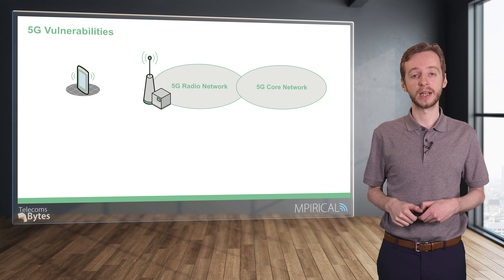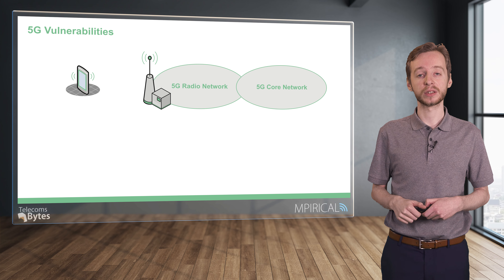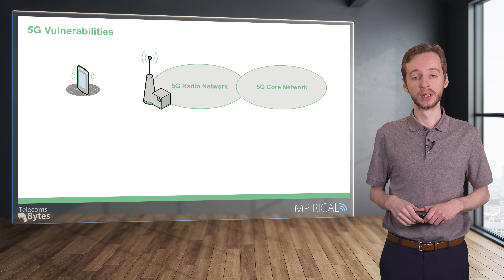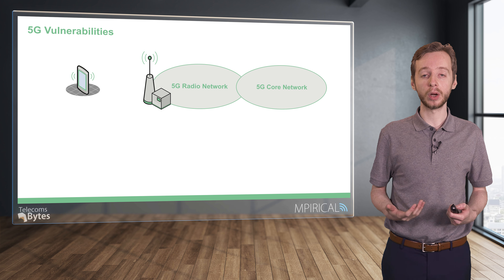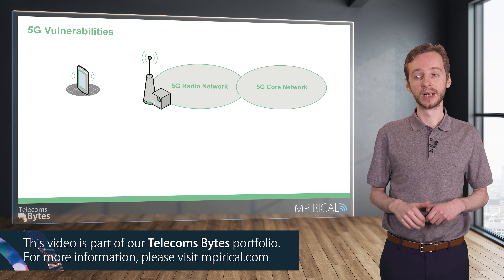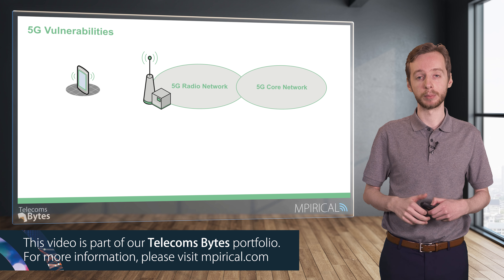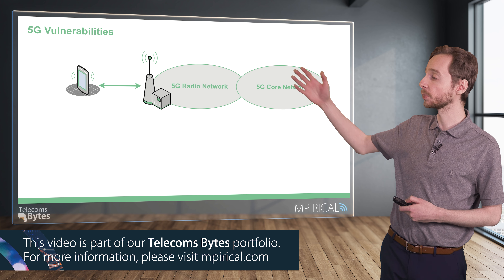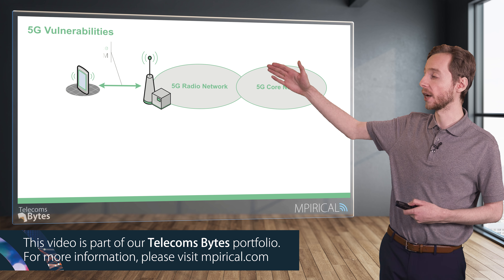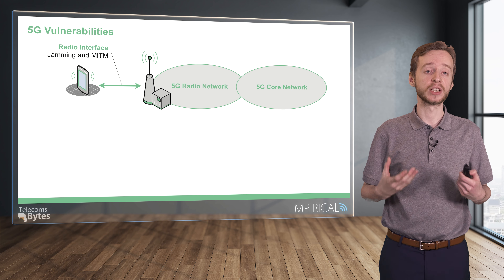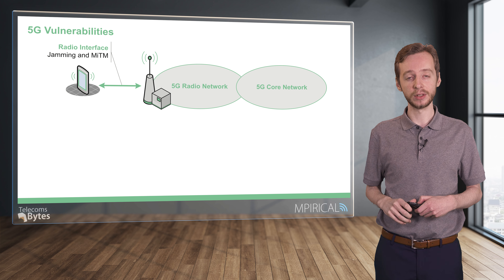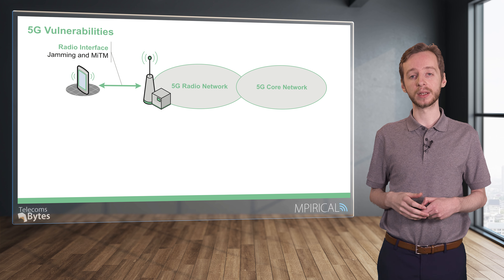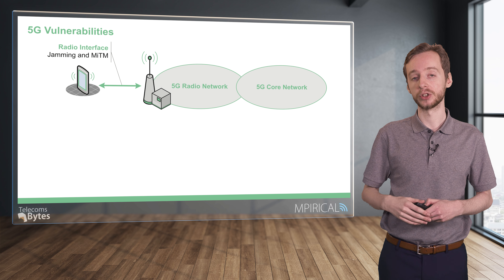Like previous cellular networks, 5G has its set of vulnerabilities. Today we're going to be exploring these vulnerabilities and how they can impact cellular networks. To start, we'll be exploring the radio interface — the communication between the user equipment and the cell site — and one of these vulnerabilities is jamming, where we block the communication between the two.